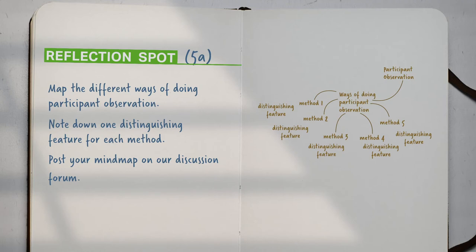Let us take a minute to revise what we have learned. Over the course of this section, we have been discussing different ways of doing participant observation. I would like you to make a diagram or a mind map of these. Go to the mind map tool or take a sheet of paper and some pens. Think of the different ways of doing participant observation that we have discussed, map these onto your mind map, and for each way, note down one distinguishing feature. Then take a picture or screenshot of the map you have created and post it on our discussion forum.